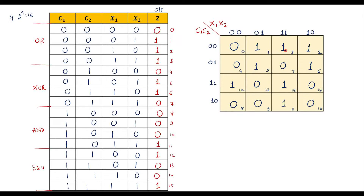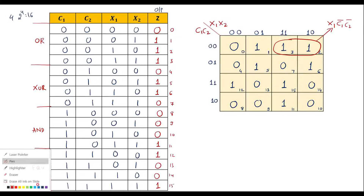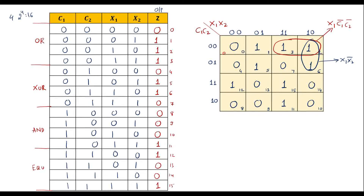It is not possible to do a group of 16 or 8, and even a quad (group of 4) is not possible. We can do one pair between cell 2 and cell 3. For that pair, X1 is common with respect to the columns, and with respect to the row, C1=0 and C2=0 gives C1̄C2̄. So the first term is X1·C1̄·C2̄. Next, cell 1 and cell 5 can be combined into a pair.